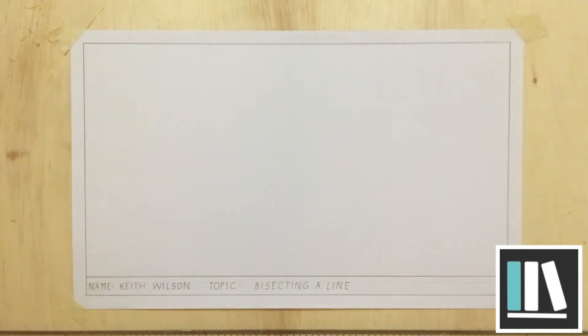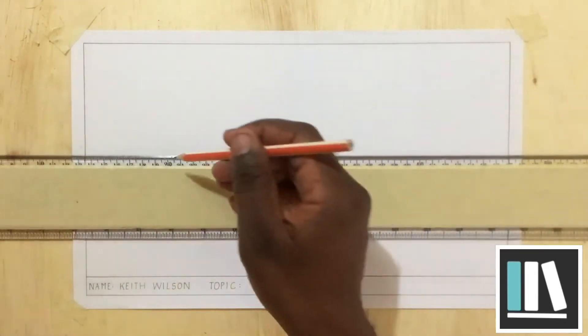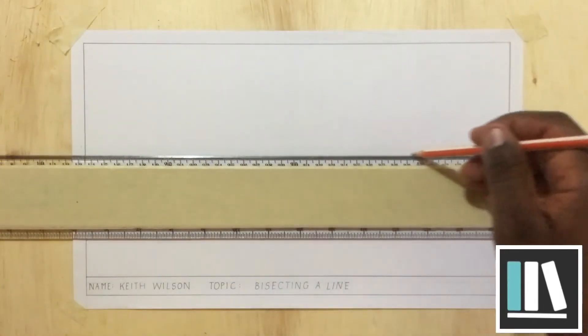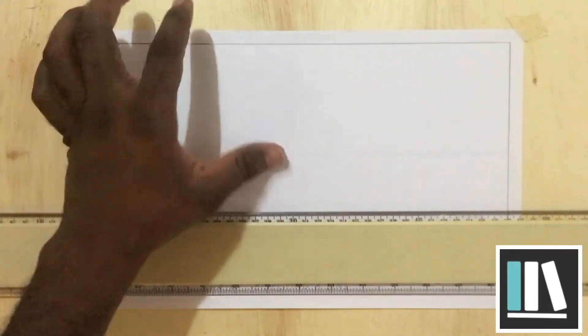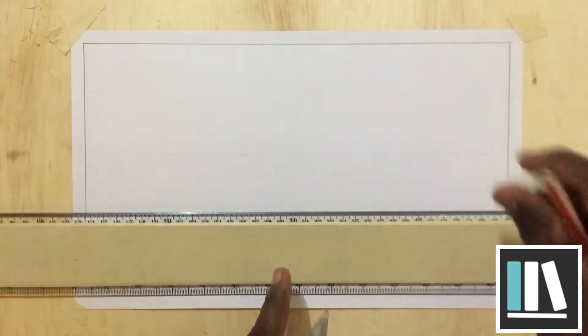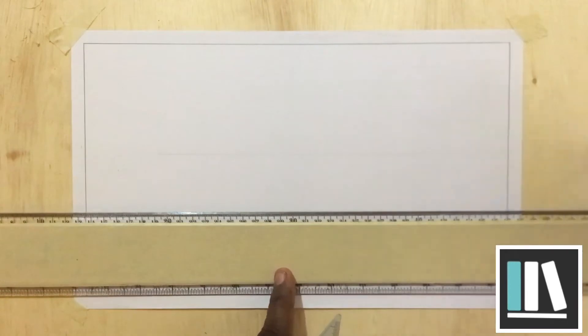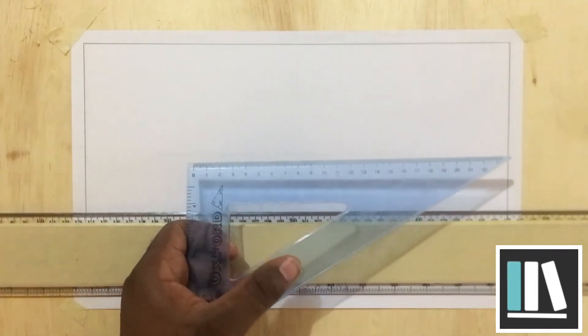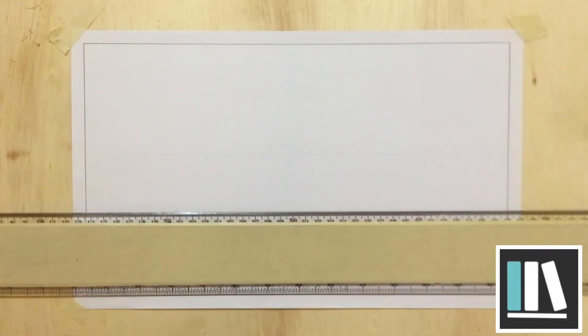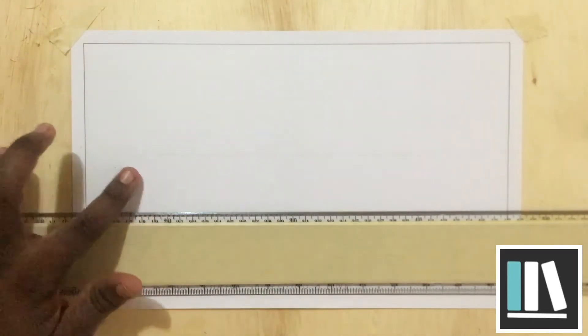In drawing any line, the first thing we do is to draw a construction line of any length. This must be estimated to be longer than the length of line that you want to draw. For example, I am going to draw a 10 centimeter line or a 100 millimeter line. This construction line must be longer. Now that I have drawn that construction line...